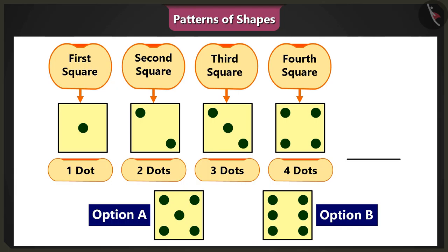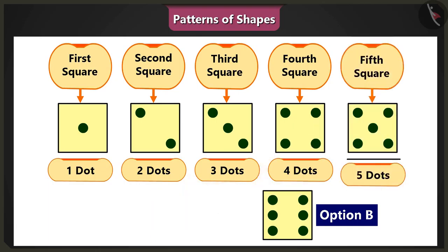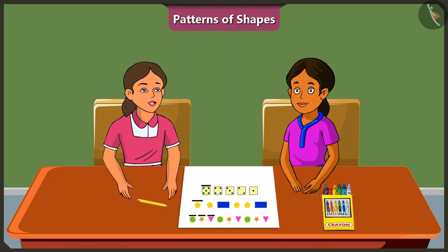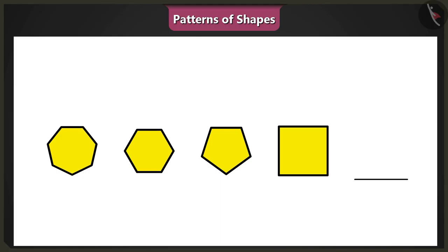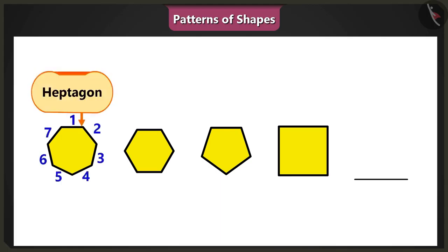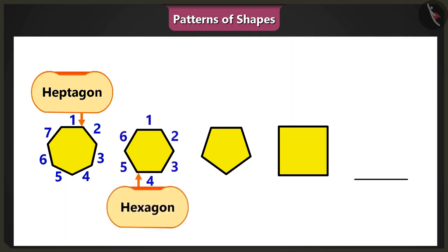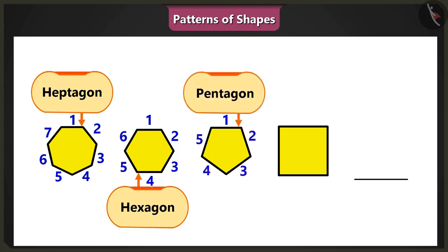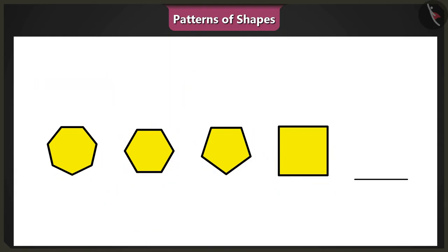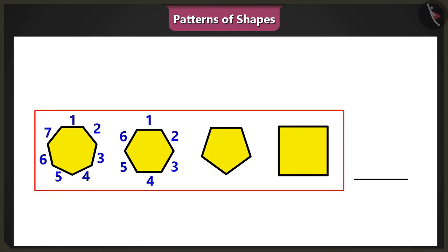So, according to this pattern, the fifth square will have five dots in it, right? Yes, but the pattern may not always be in ascending order. For example, here is a pattern of shapes. In this pattern, a seven-sided shape — heptagon — is followed by a six-sided shape — hexagon. Then a five-sided shape has been added, and finally a four-sided shape has been given. In this pattern, the sides of all the shapes are in descending order.